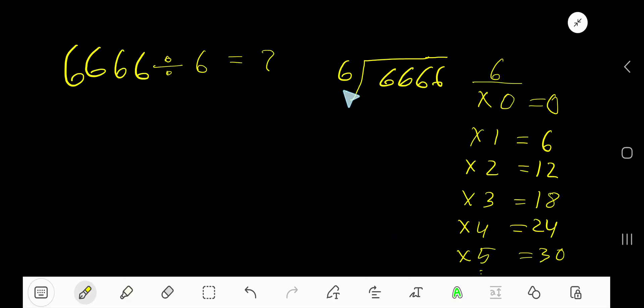6666 divided by 6. Yes, 6 is a divisor, so you need the multiplication table of 6. 6 times 0 is 0, 6 times 1 is 6, 6 times 2 is 12, 6 times 3 is 18, 6 times 4 is 24.